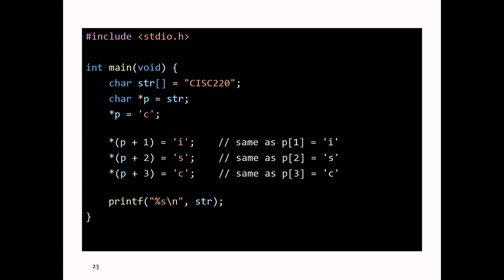All that C knows is that there's an array somewhere and it has characters in it. So it needs that null terminator to indicate that's the end of the string. You can make an array that's much longer than 8. So you can make an array of length 100 and put the characters CISC220 backslash 0 in that array.